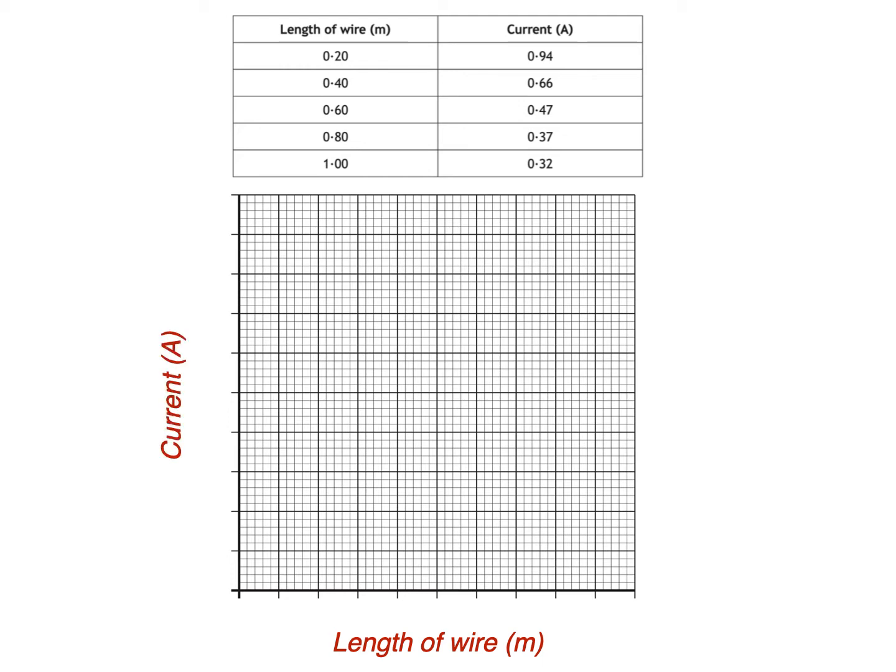The next thing we need is a scale on both axes. For that we need to look at the maximum values of both length of wire and current. The maximum length is 1.0 meters and because there are 10 divisions on the x-axis it makes sense to increase by 0.1 meters each division.